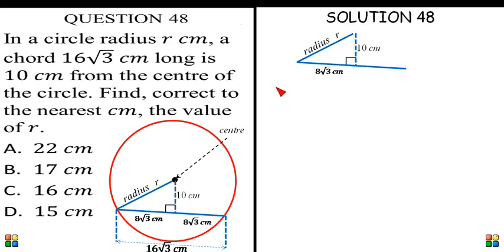The square of the hypotenuse, R², is equal to the square of 10 plus the square of 8√3. R² is going to be 100.